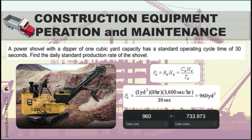Here is an example of deriving equipment productivity. A power shovel with a dipper of 1 cubic yard capacity has a standard operating cycle time of 30 seconds. Find the daily standard production rate of the shovel. The cycle capacity CE = 1 cubic yard, the cycle time TE = 30 seconds, and the number of operating hours HE = 8 hours. Therefore, applying the data with the formula, the daily standard production rate is 960 cubic yards, which is also equivalent to approximately 733.93 cubic meters.